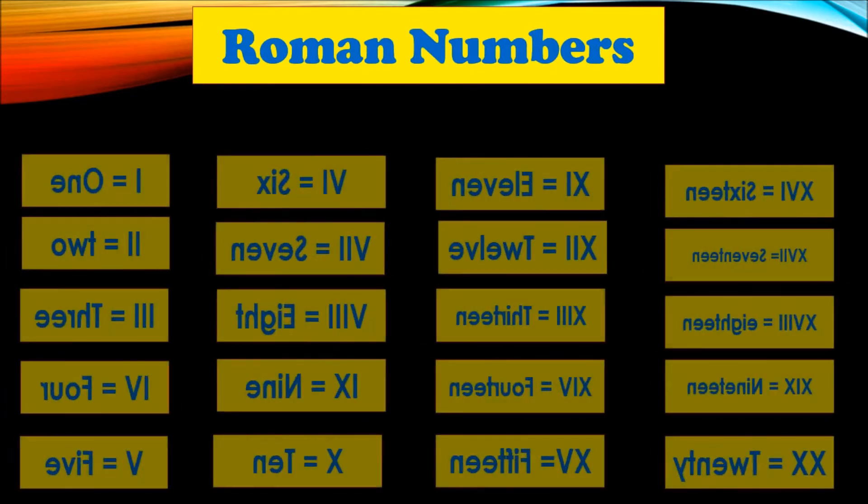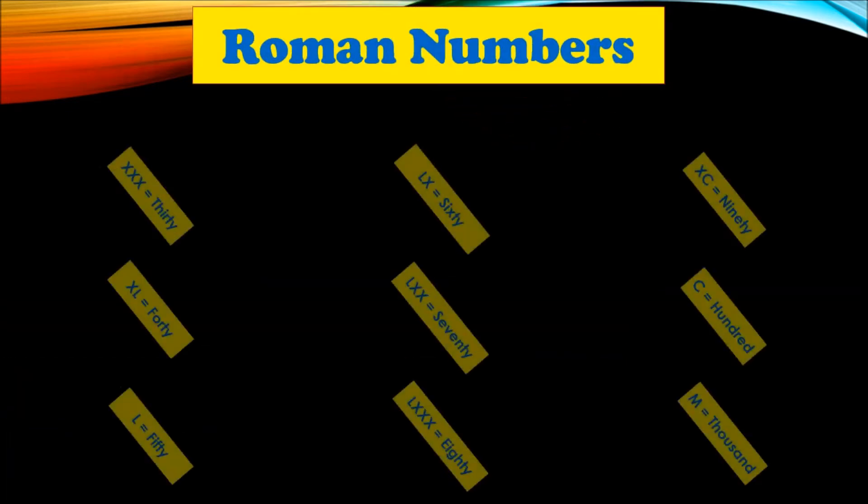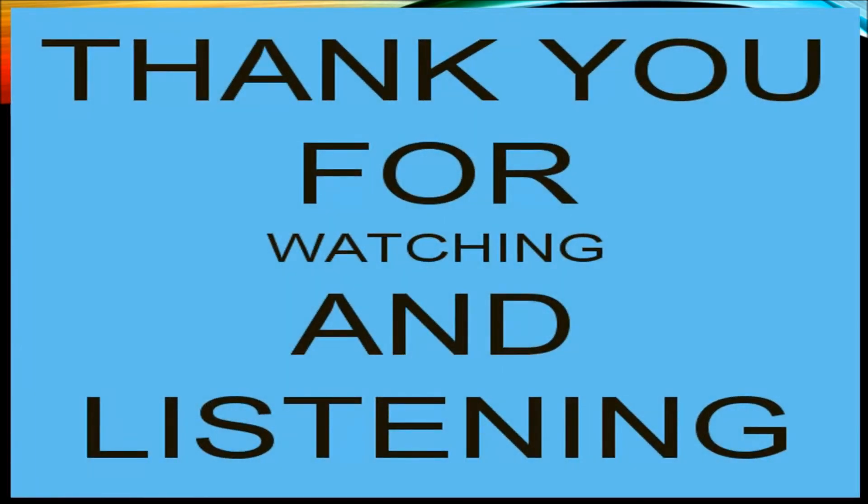Now some Roman numbers from one to one hundred twenty. Roman numbers of thirty, forty, fifty, sixty, seventy, eighty, ninety, one hundred, and one thousand. These are all the alphabets used to write Roman numbers. Thank you for watching and listening. I hope you liked my video.